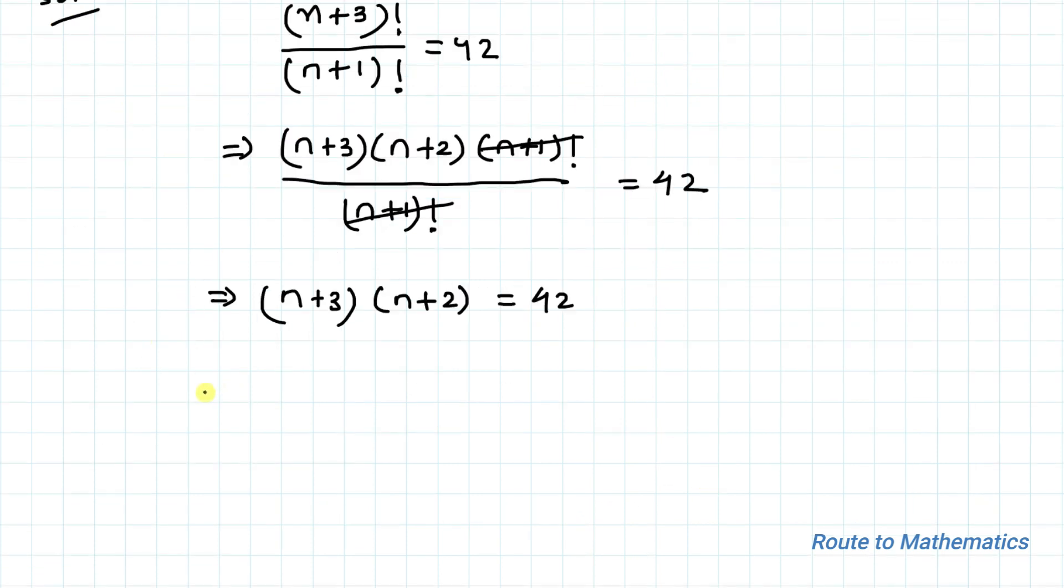Now in the next step, let's multiply each term in the left hand side. So we have n² + 3n + 2n + 6 equals 42. This implies n² + 5n + 6 equals 42.